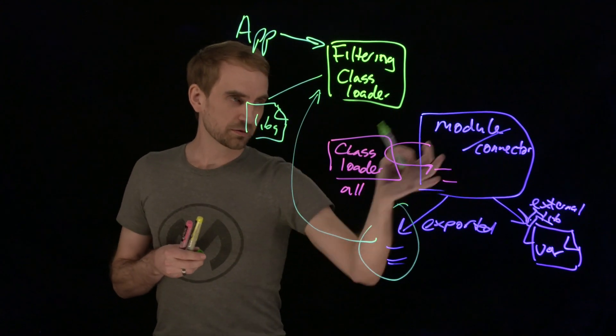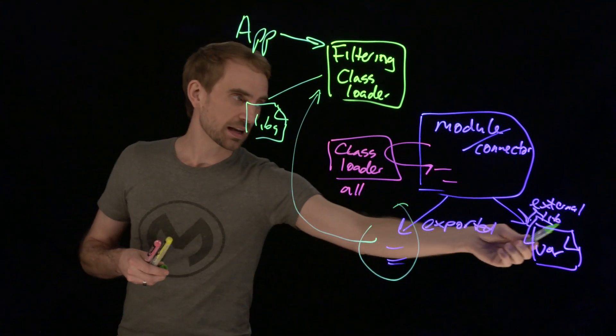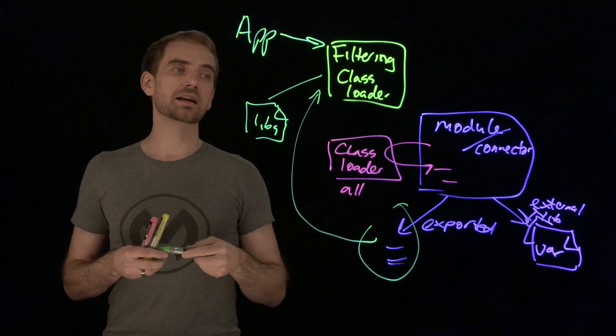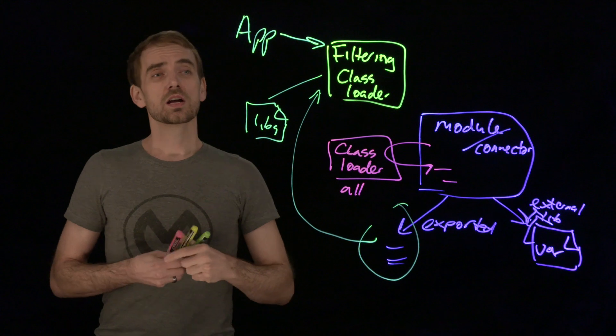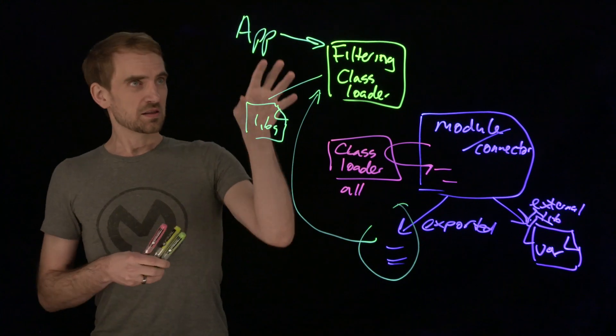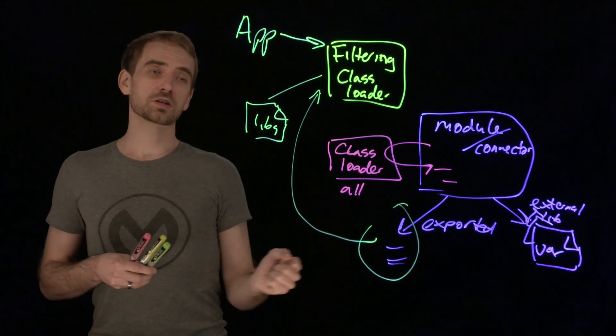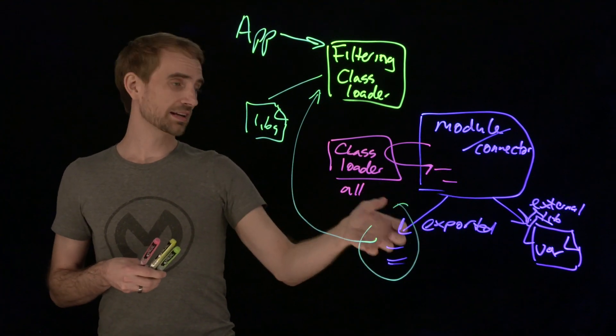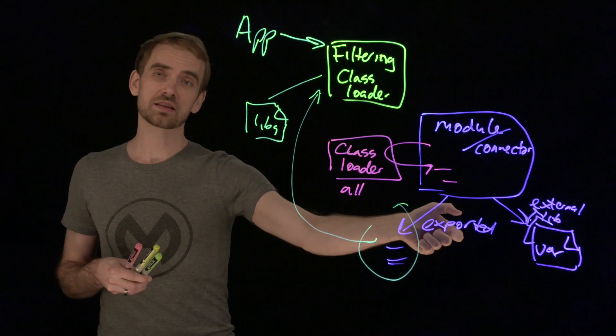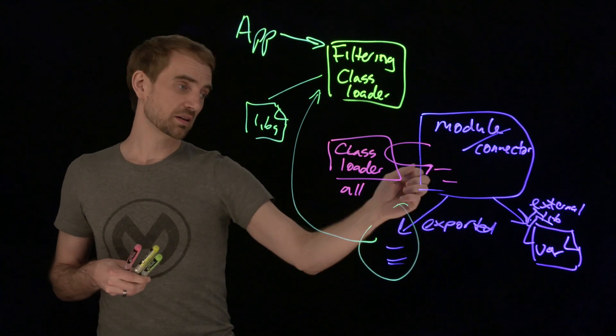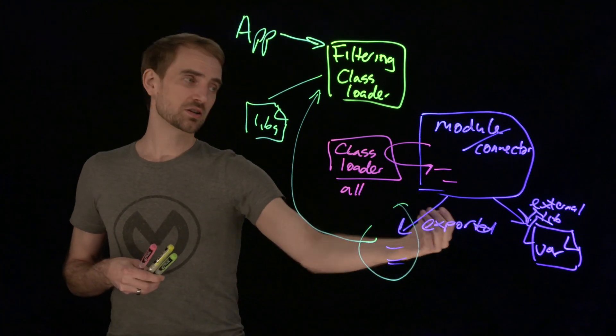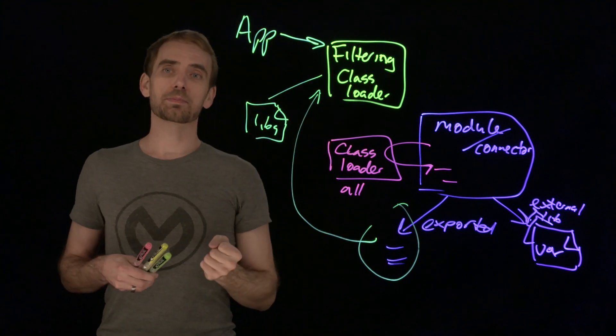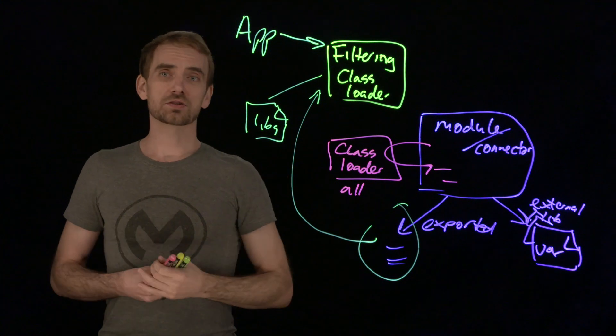It doesn't see all of the internal workings, and any of the external libraries that you have that are specific to this are not made available through that filtering class loader. That's how you get the application able to see some important things that you've decided need to be exported. The person building that module or connector decides what goes into that list. They would put the list of the packages, and the underlying filtering class loader will use that plus whatever you've defined in your application and only make those available.